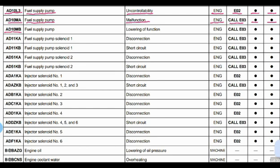Code AD10MB: the part is the fuel supply pump and the problem is lowering of function. Controller is the engine controller. Action code E03. Lamp will blink and beep is coming from the buzzer.